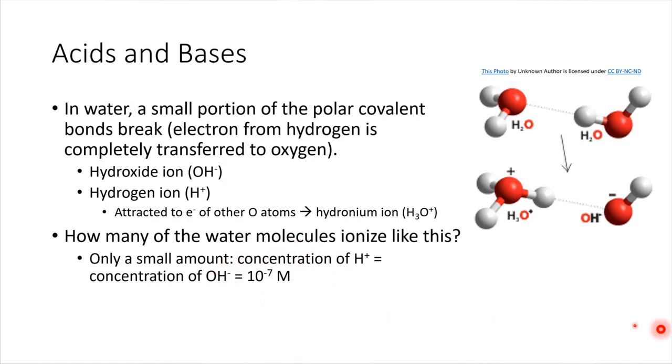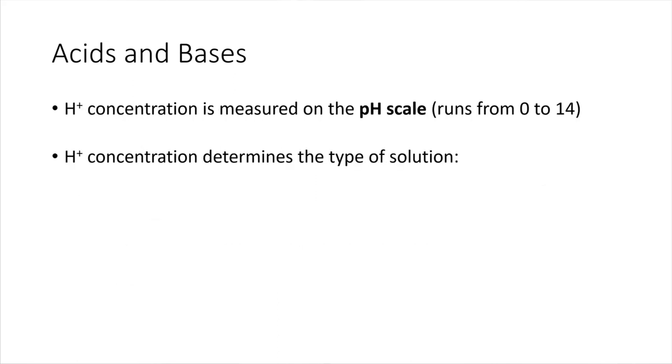So pH is a way that we can measure acidity. Substances can be acidic, basic, or neutral. That measurement is based on the hydrogen ion concentration. By the way, I've been being somewhat careful to refer to this as a hydrogen ion, which is exactly what it is. We will also be calling this a proton. A hydrogen ion is the same thing as a proton. Just as a note for going forward.